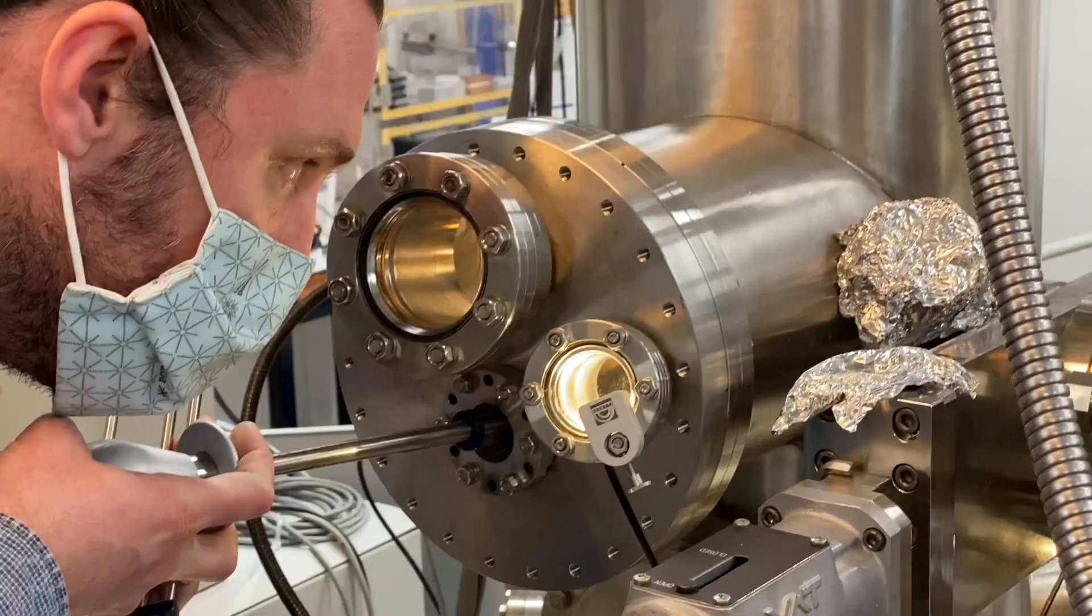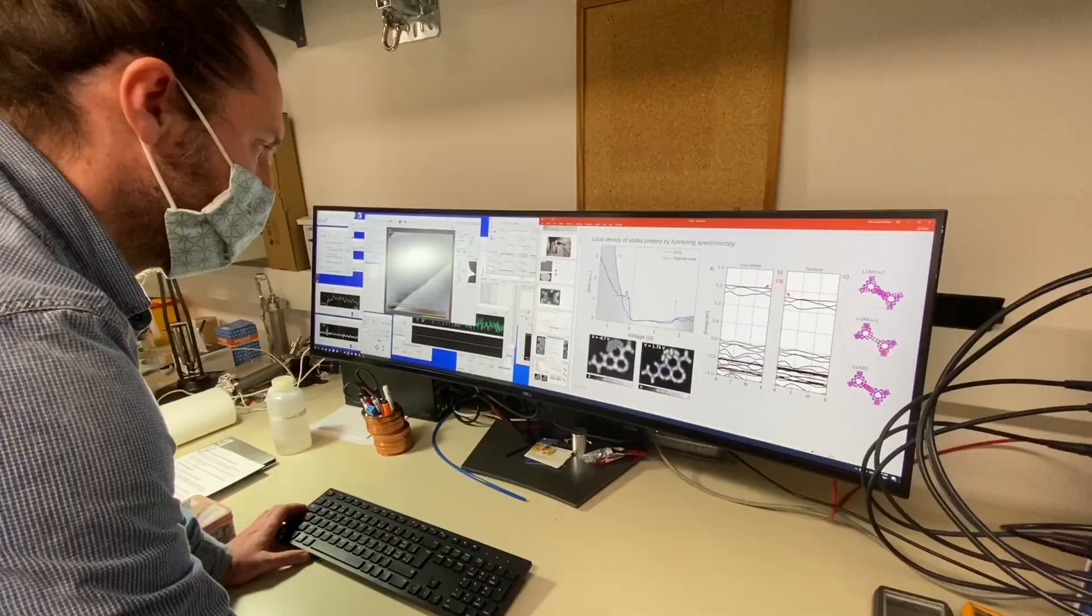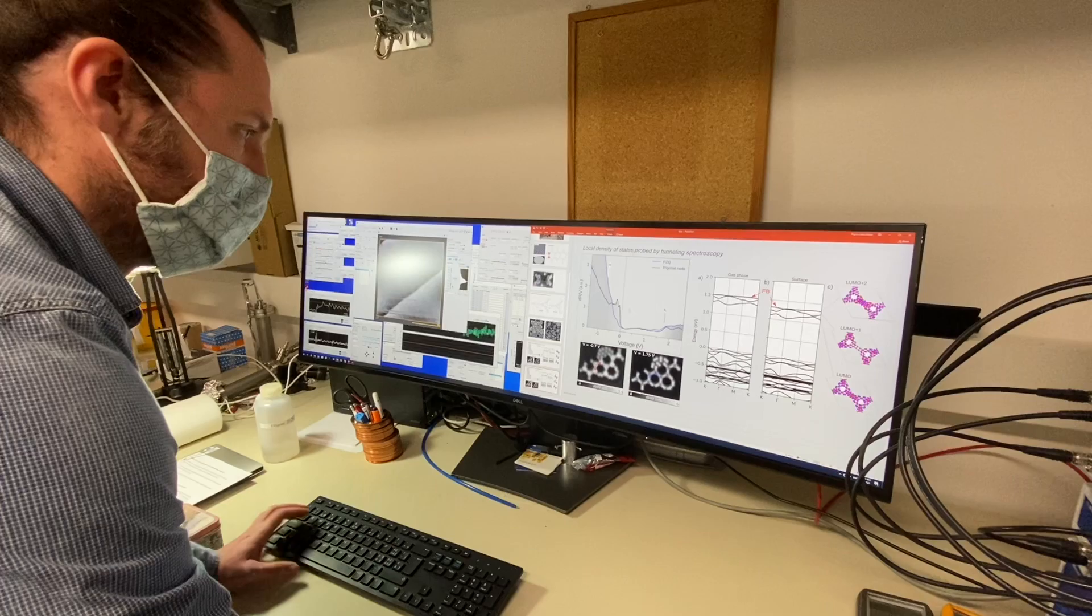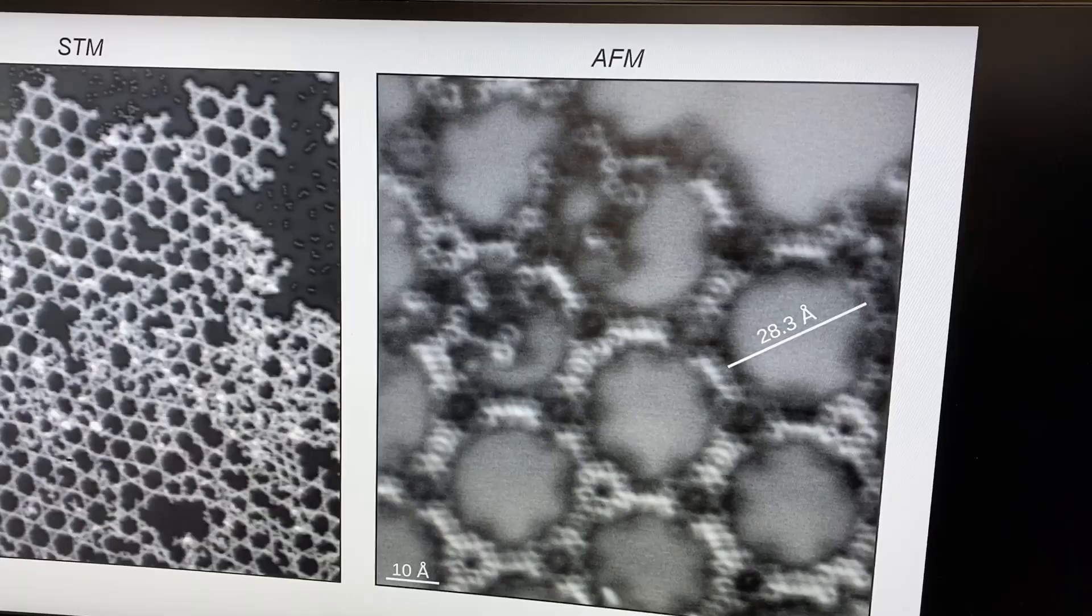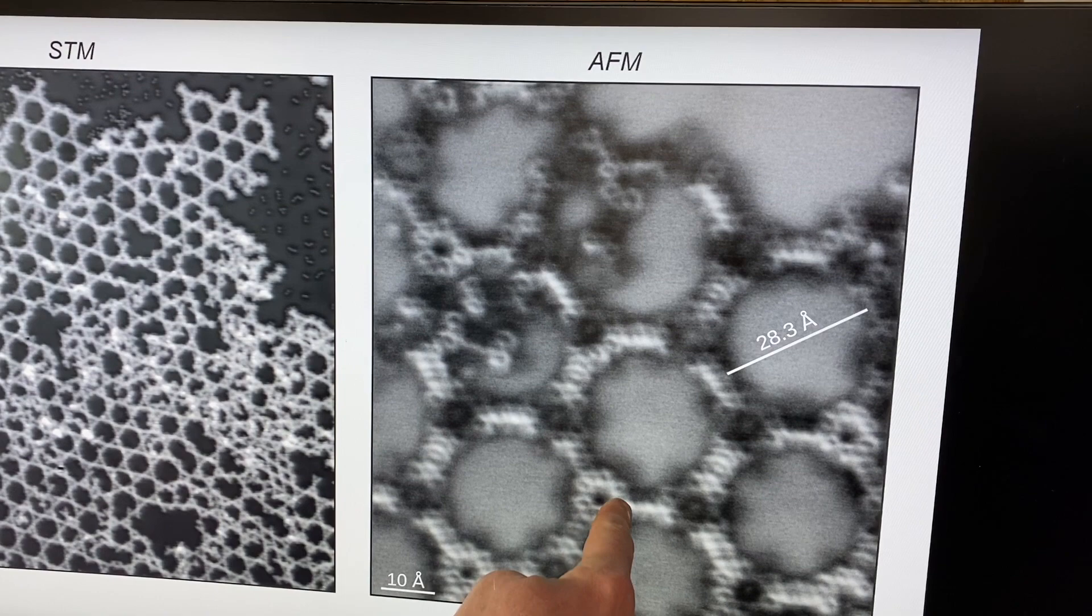So we characterize the Kagome graphene using scanning probe microscopy in combination with theoretical calculation. With IFM, we clearly resolve the chemical structure of the Kagome graphene for the first time.